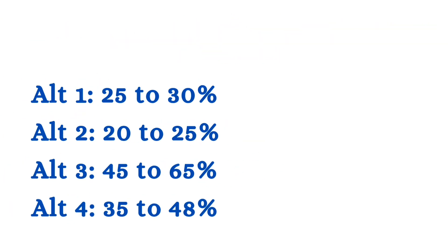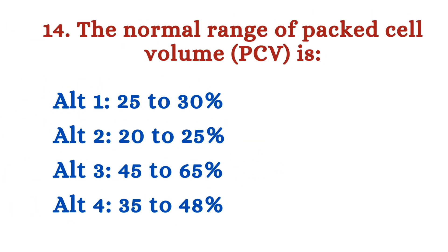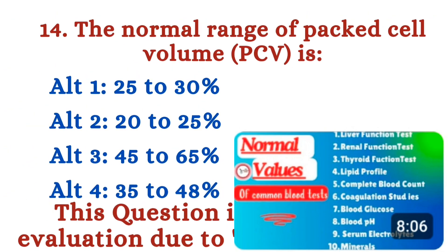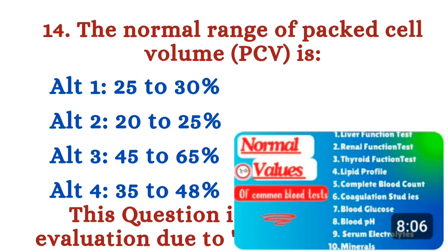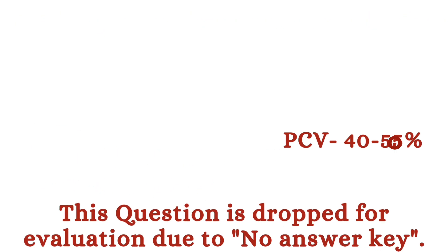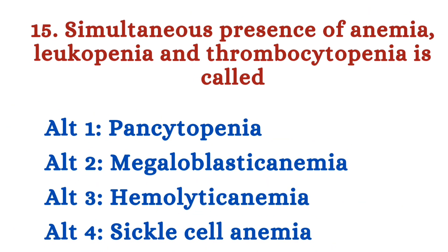Next question: The normal range of packed cell volume (PCV) is — Option 1: 25–30%. Option 2: 20–25%. Option 3: 45–65%. Option 4: 35–48%. Normal values of different laboratory tests are uploaded in the channel. This question was dropped for evaluation by RRB due to no definitive answer; the accepted value for PCV is 40 to 50%.